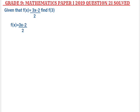Where there is x, we are going to put the value which is 3. Where there is x, we will write 3. So we are going to say f of 3 is equal to 3 multiplied by 3, minus 2, over 2.